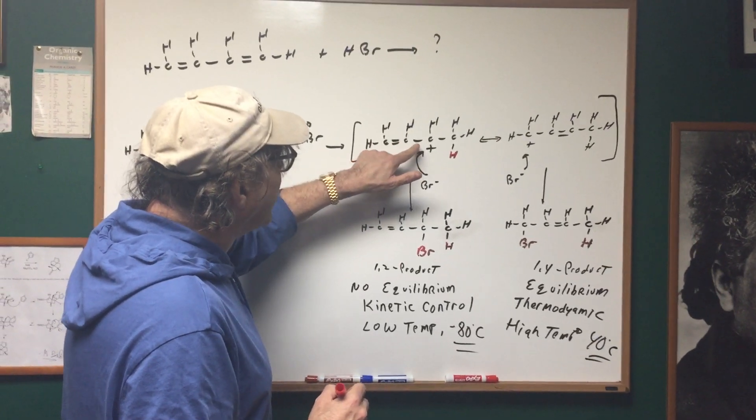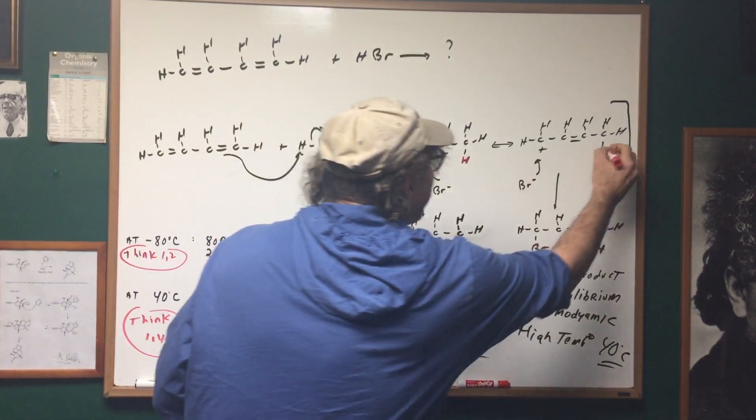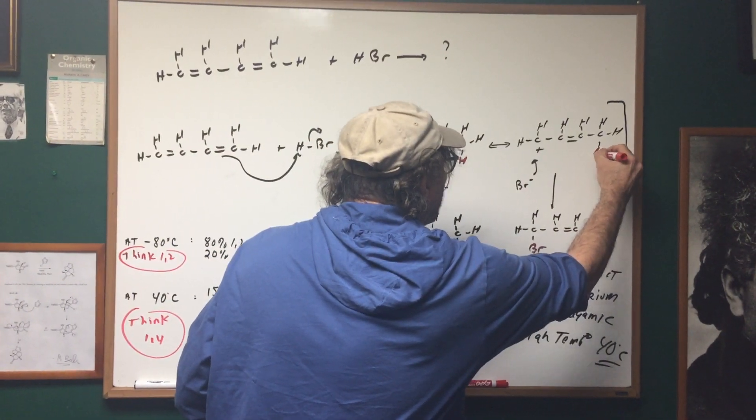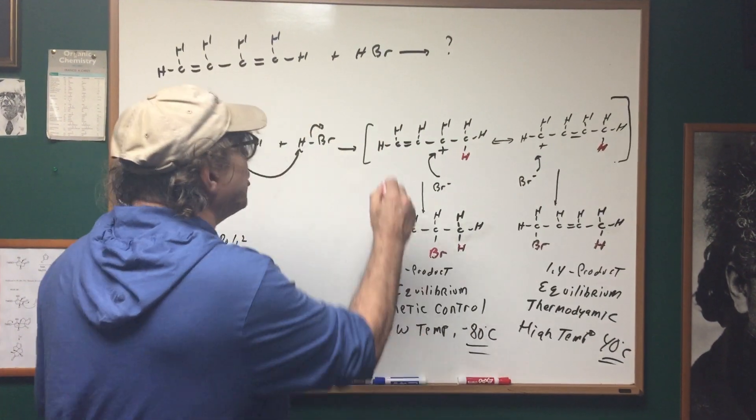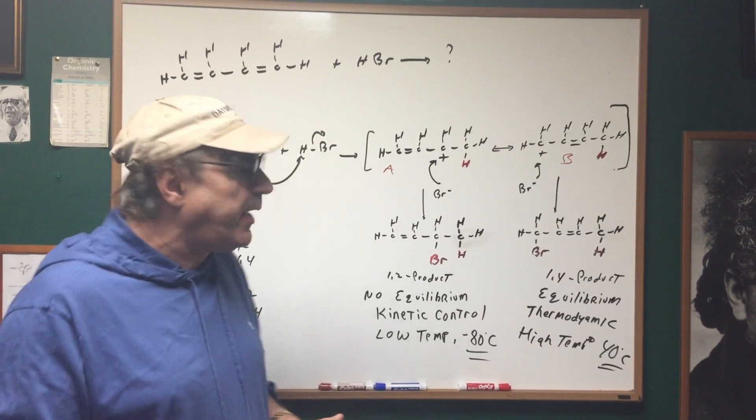Now this carbocation can have resonance. So if this moved over, that would give this. Let's keep that H there so we keep track. So we basically have two carbocations: carbocation A and carbocation B.